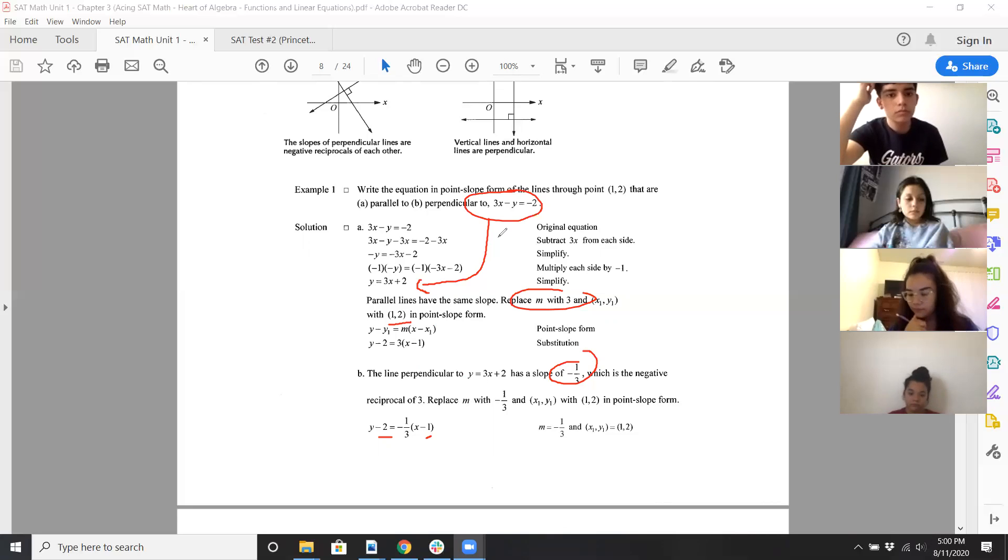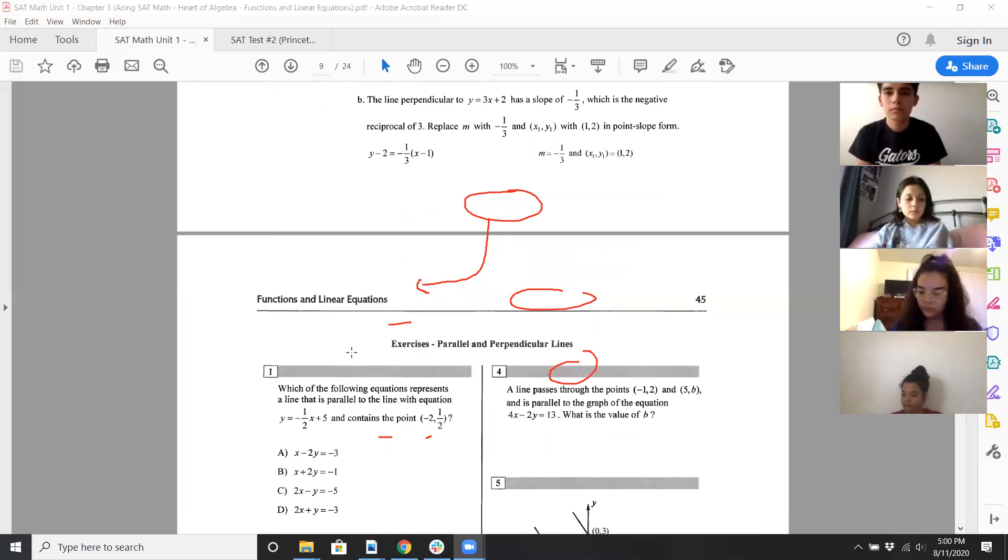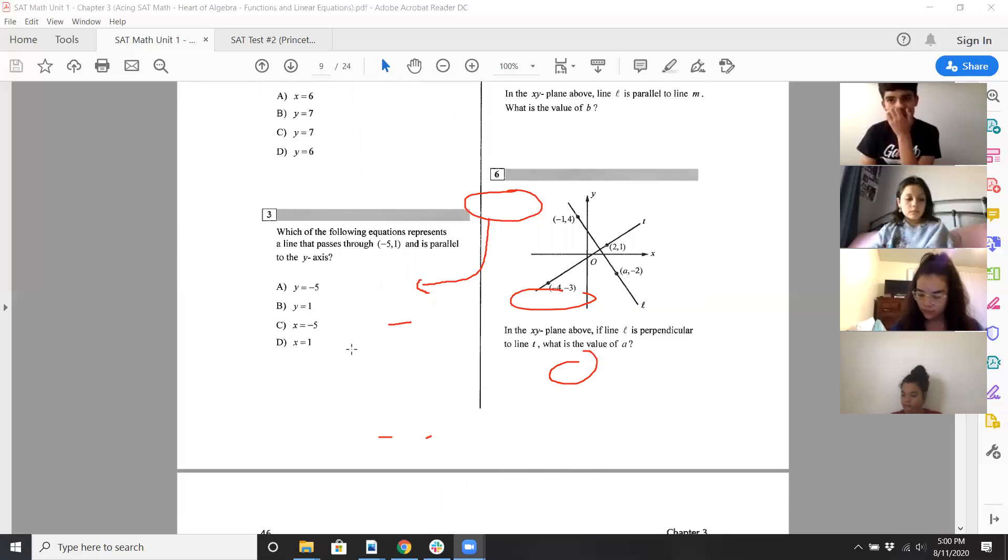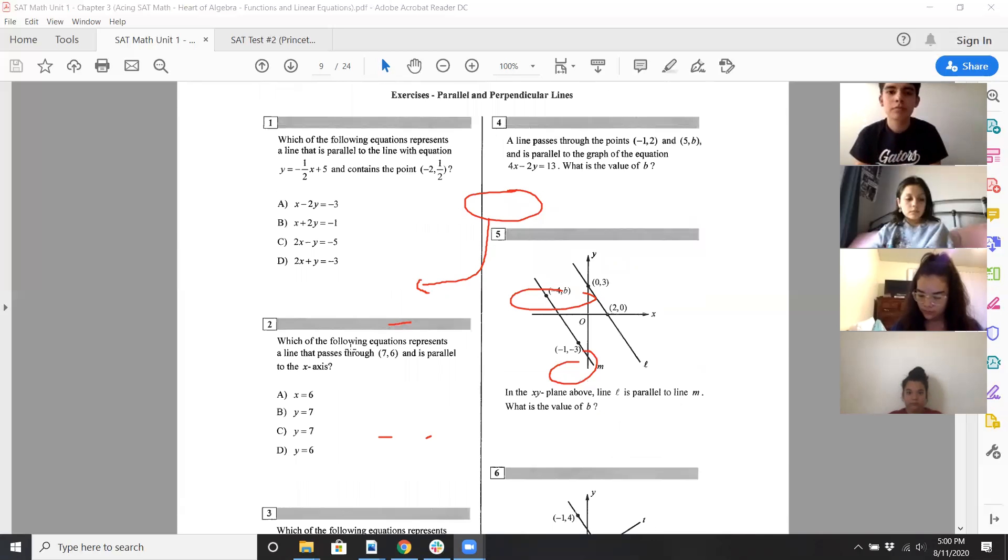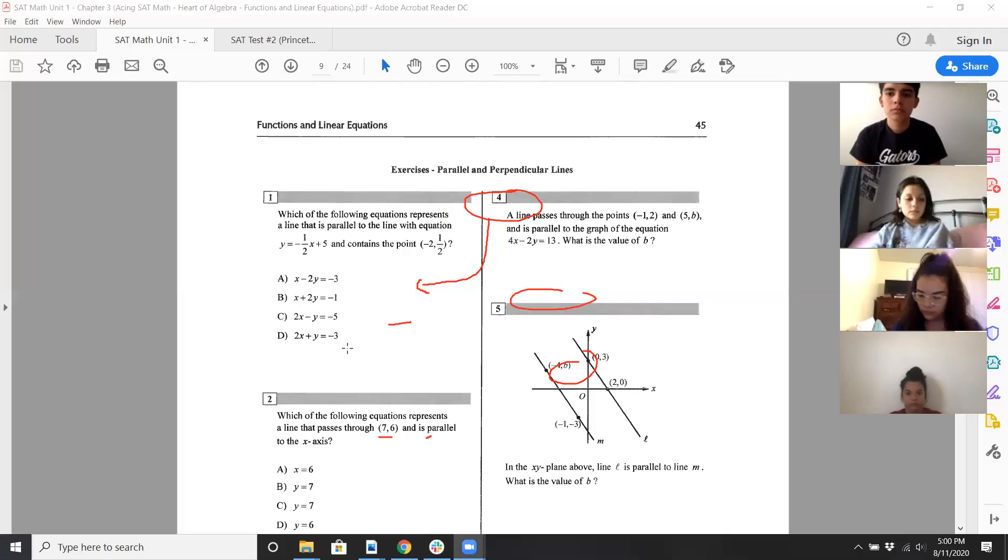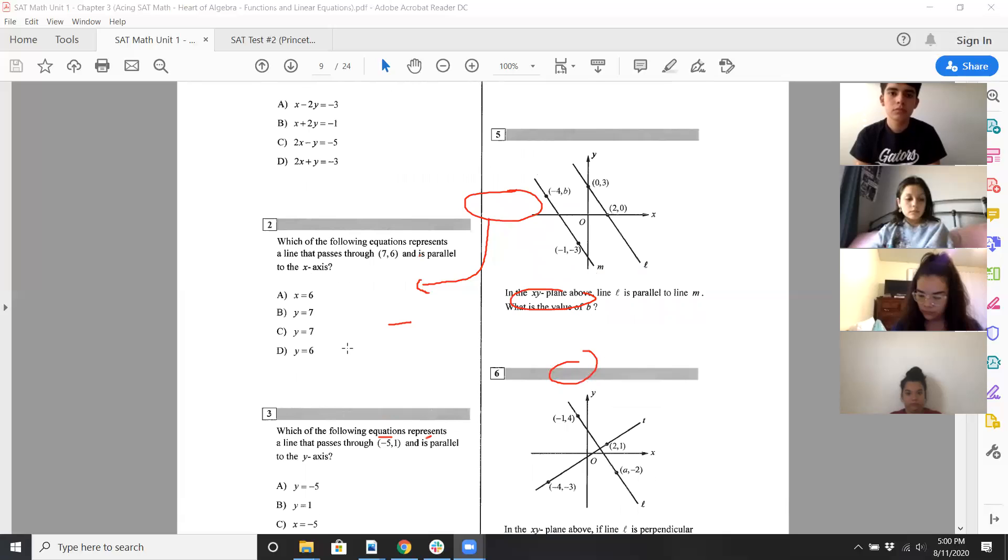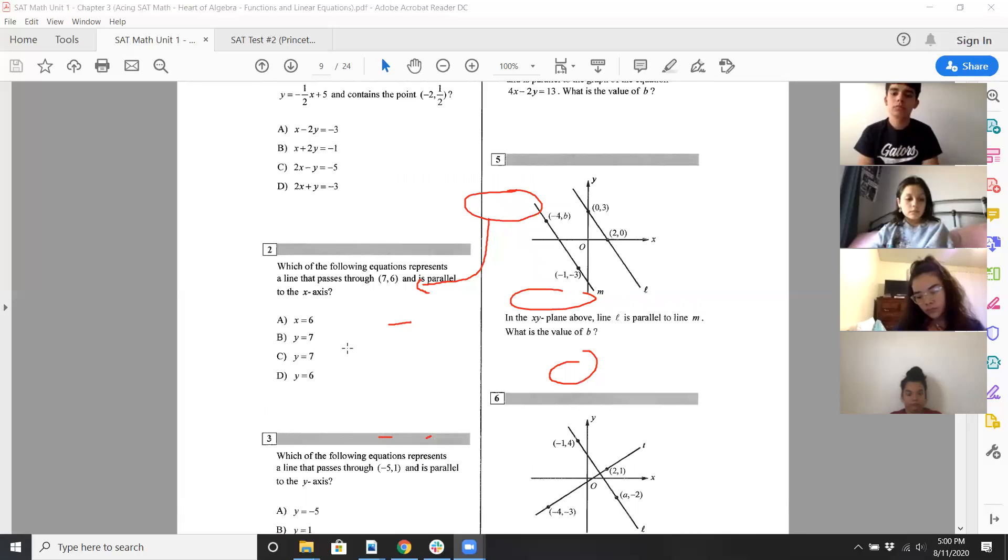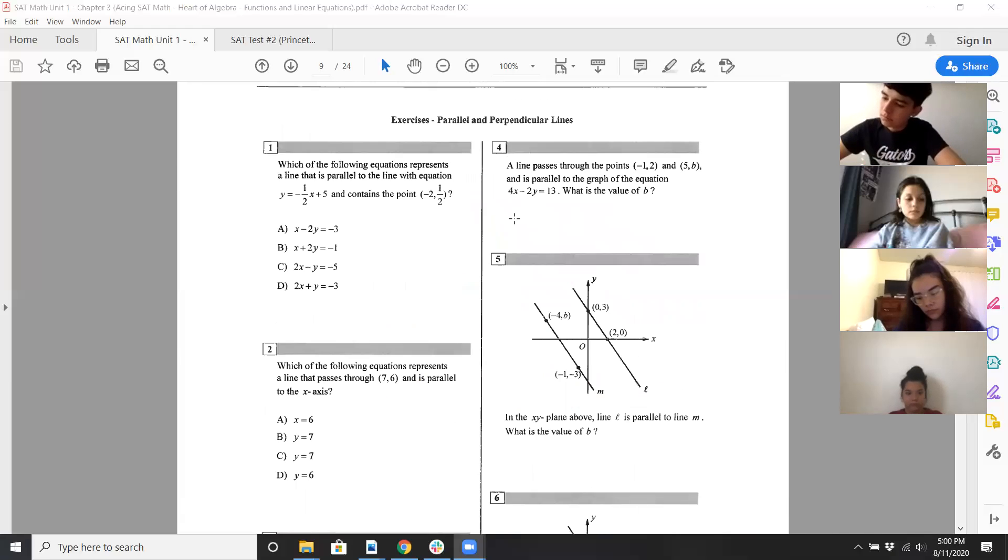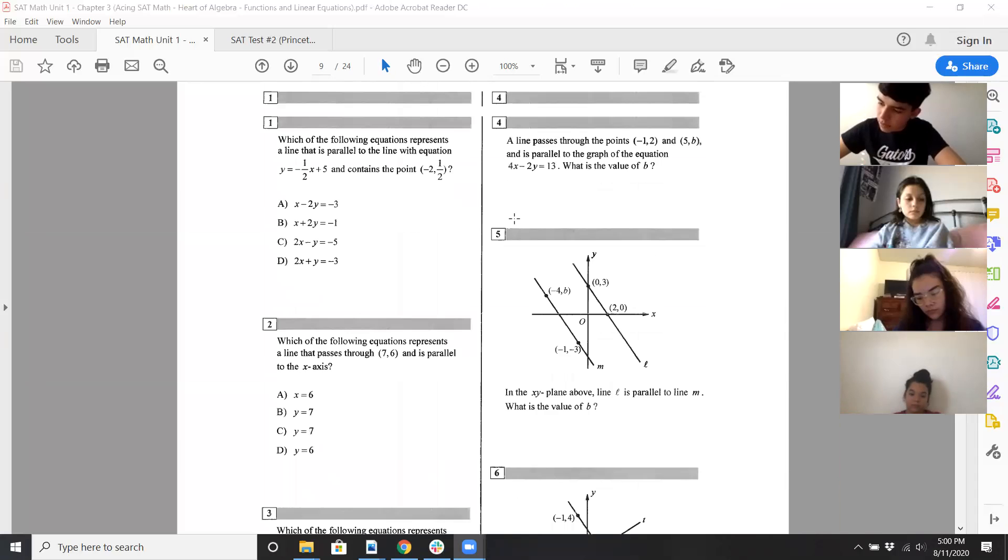So again, if you're asked to write something that's parallel to a particular line, the line's going to be in standard form, rewrite it in slope intercept form, get the slope, and then use the point that you're supposed to pass through and you could use point slope form in that, in that sense. So, I'll do probably four and six, let's say. Yeah, I'll do four and six and I'll have you guys do one, two, three, five in your breakout rooms.